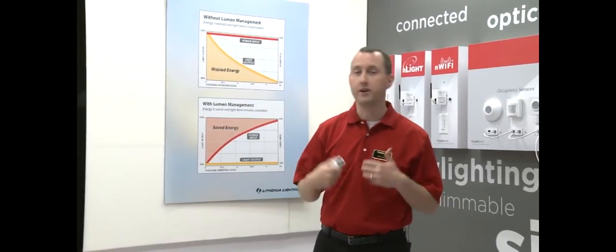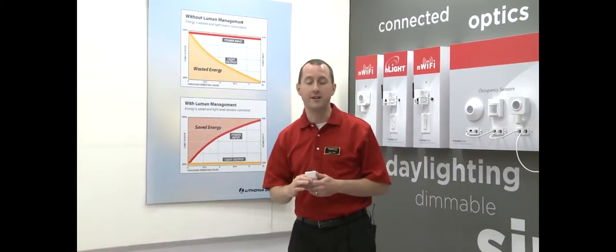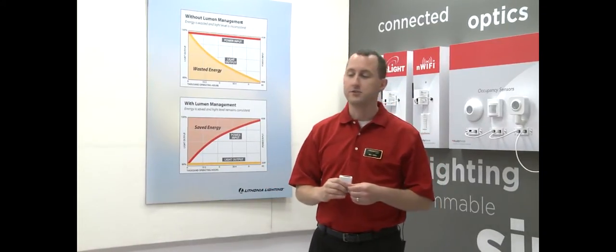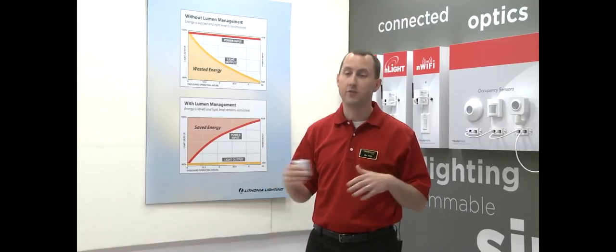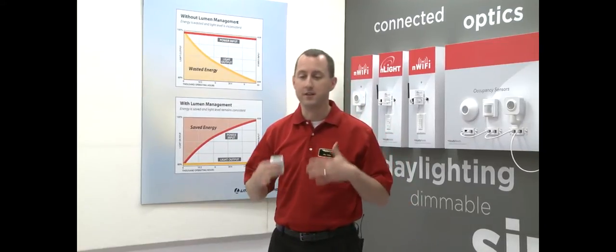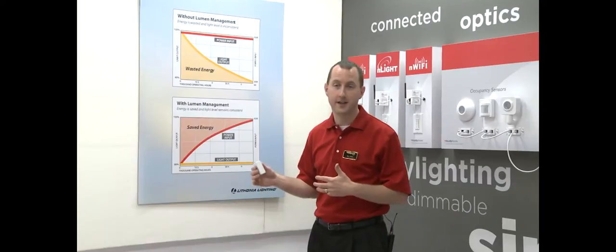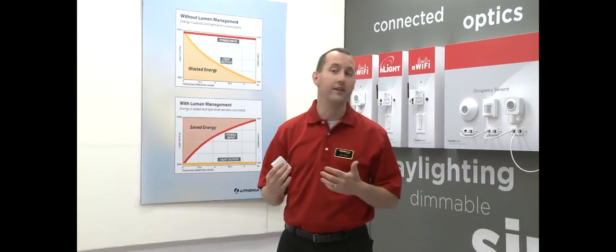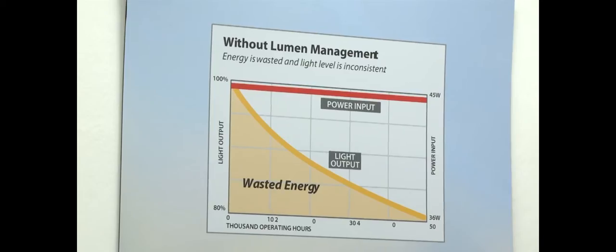The first thing it provides is what we call lumen management. Lumen management takes advantage of the common practice that traditionally lighting designers will design a space for maintained lumens because they need to compensate for the fact that over time, the lumen output of a fixture will decrease. So day one, they're actually over lighting a space. Well, obviously, if you're over lighting a space, you're wasting energy.